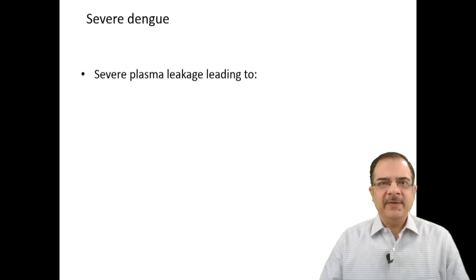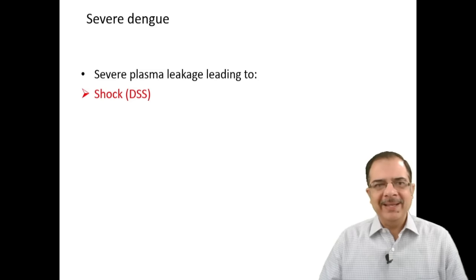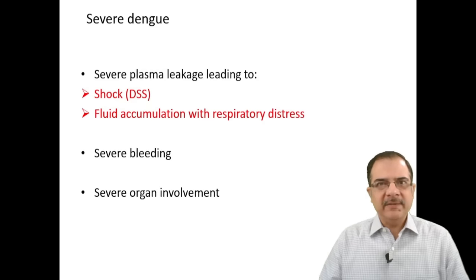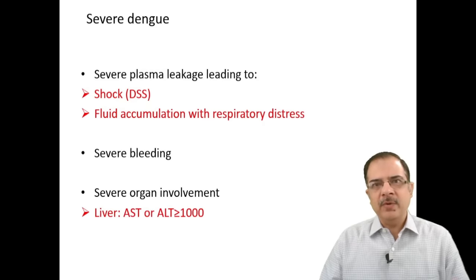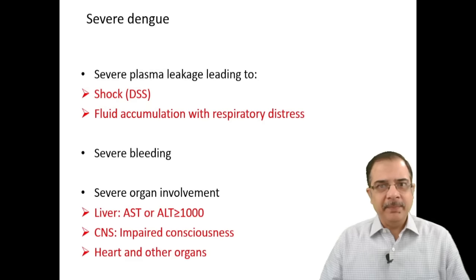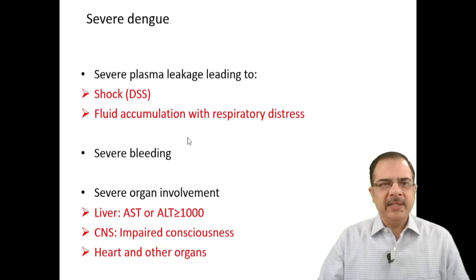Severe dengue fever is characterized by severe plasma leakage leading to shock — hypotension, increased capillary refill time — or fluid accumulation with respiratory distress. There can be severe bleeding or severe organ involvement, with elevated liver enzymes, impaired consciousness, or cardiac failure. Any of these represent severe dengue fever.